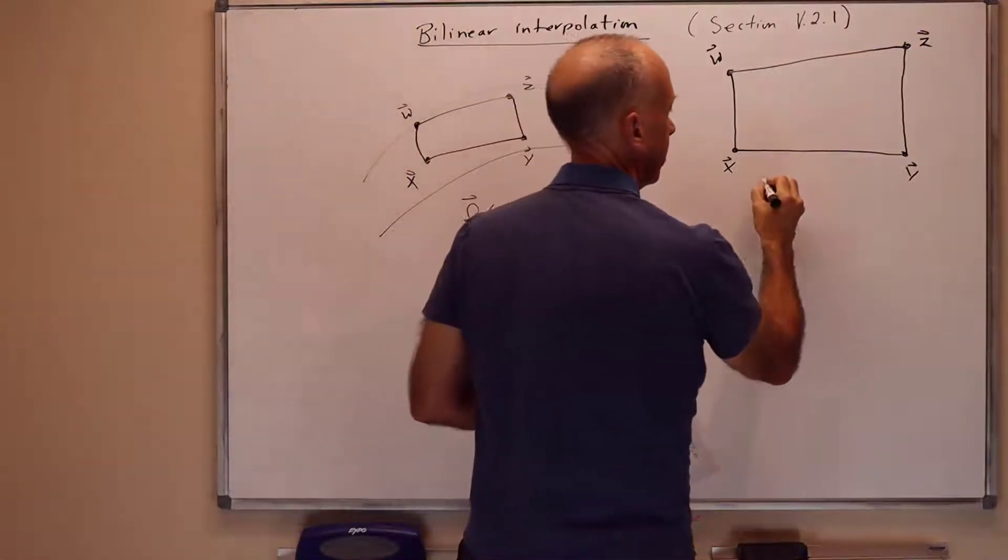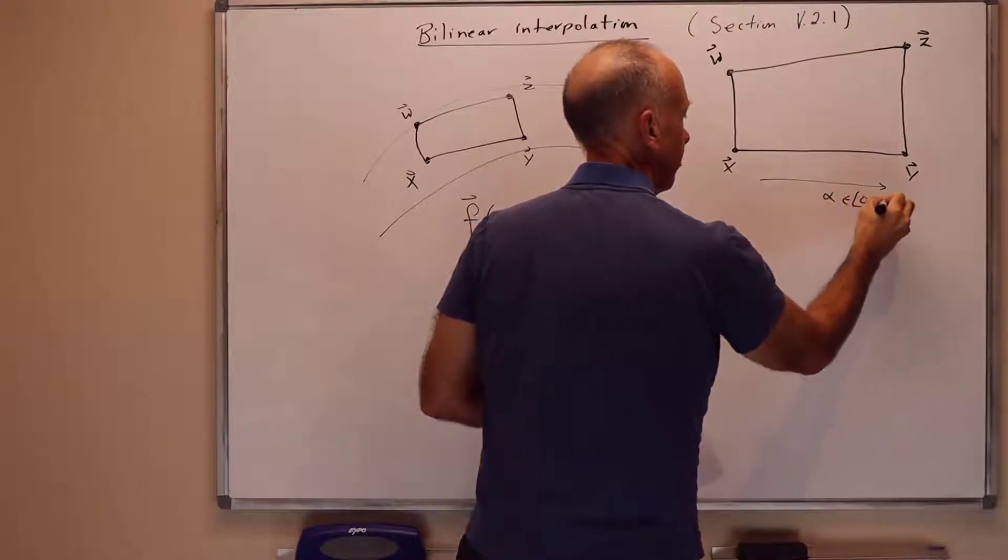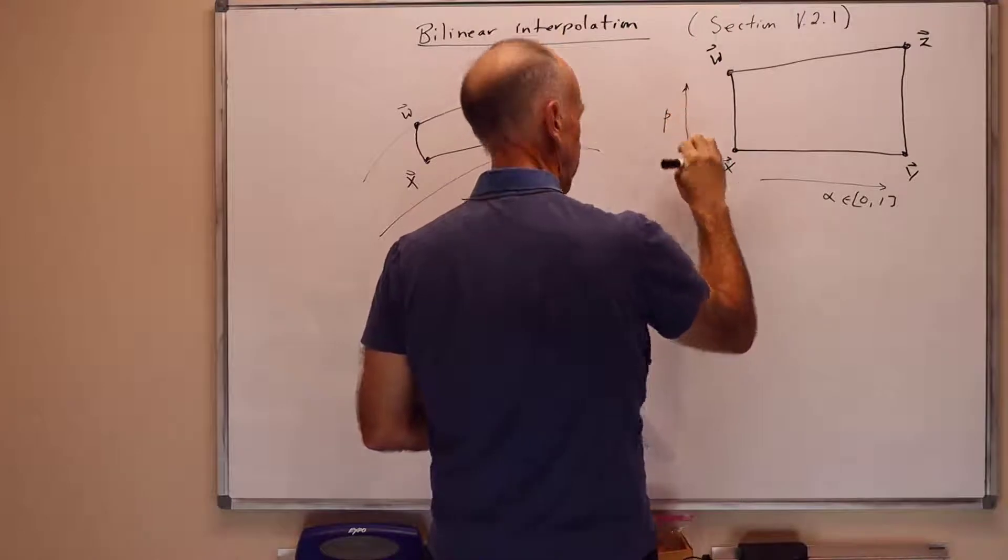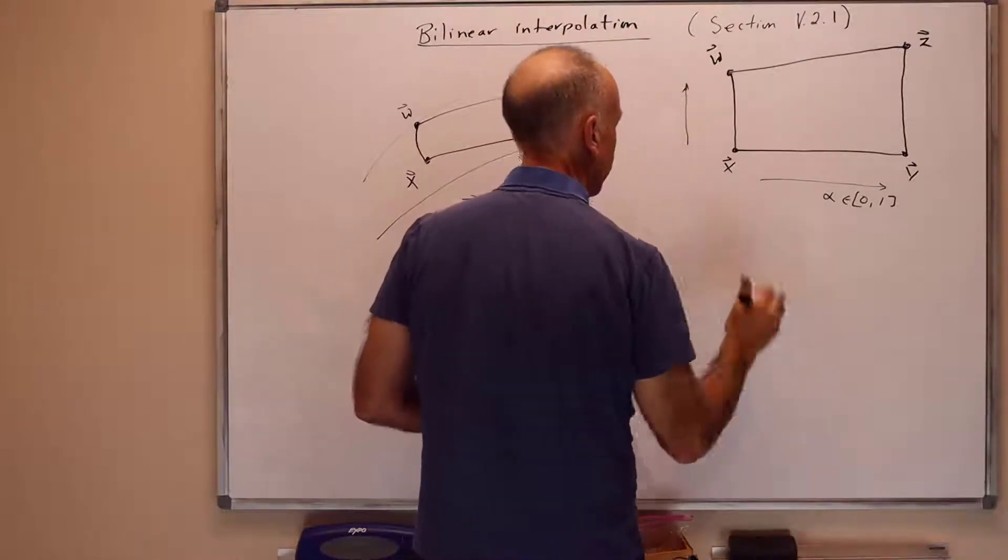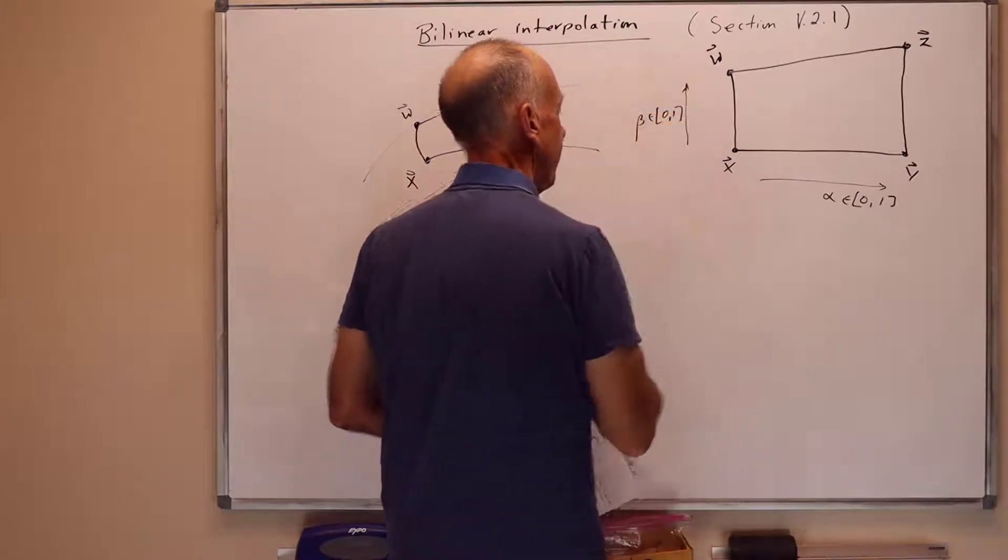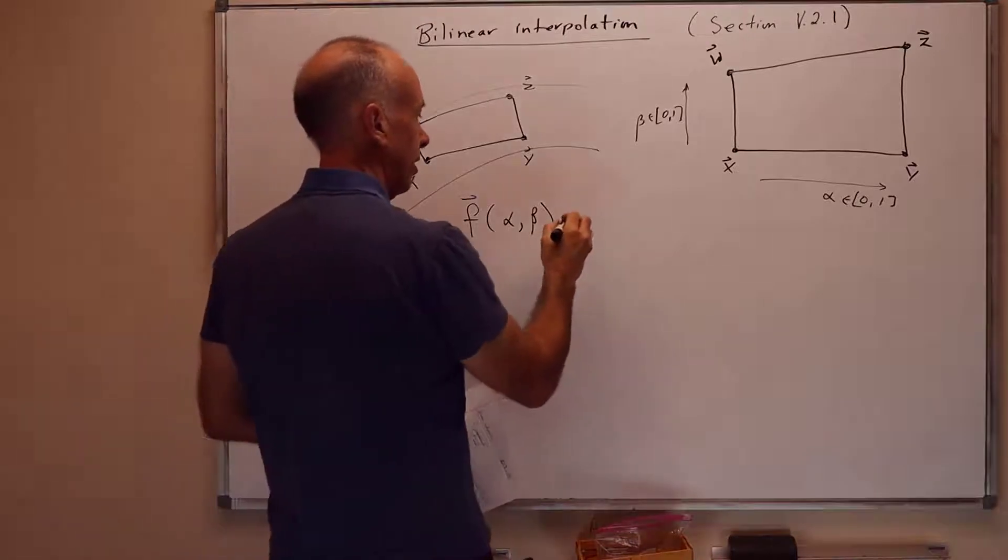And alpha is going to measure direction in this way and will be in the interval 0, 1. And beta is going to measure direction from the bottom to the top. And beta is also going to be in 0, 1.